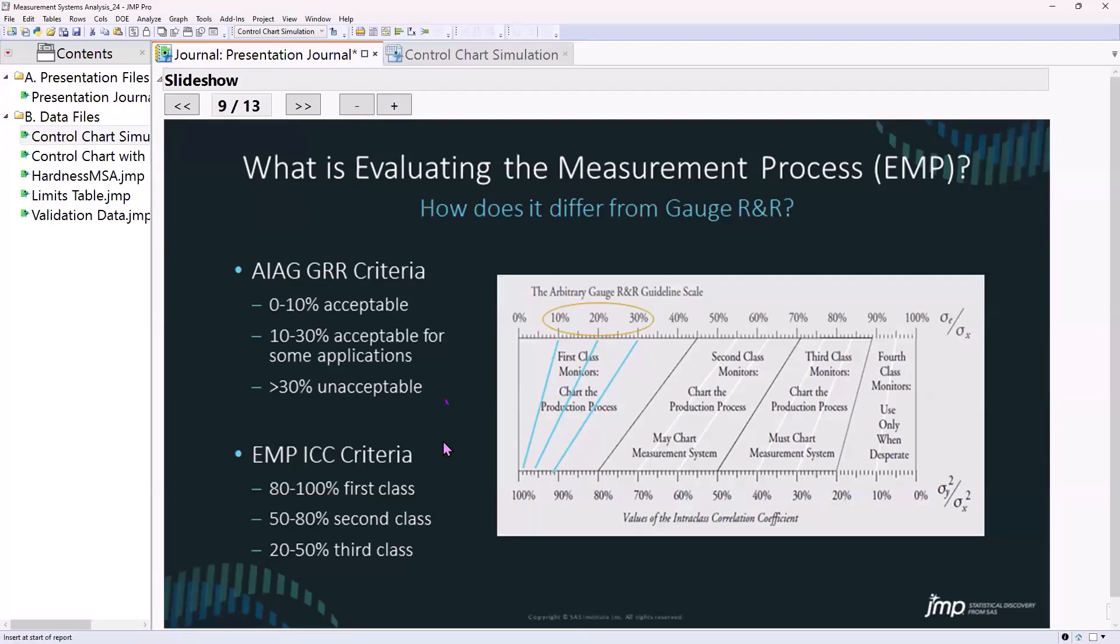Percent R&R and the EMP use different classification methods - the intraclass correlation. It's probably easiest to understand the difference by comparing these two. This comes from Donald Wheeler's EMP3, Evaluating the Measurement Process and Using Imperfect Data. It's a wonderful book.